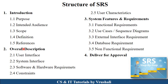The second part of the SRS document is the overall description. The first item is the user interface — every user has a different interface. Students, teachers, and HODs each have their own interface with different features. Next is the system interface, which specifies what type of server is used, for example Apache, HTTP, or HTTPS. Then there are software and hardware requirements — which programming languages and frameworks are used for development, and what hardware is needed to access the application, such as keyboard, mouse, and monitor.